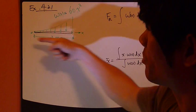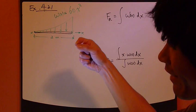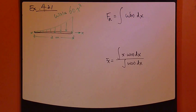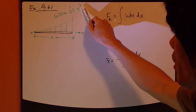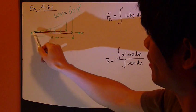Now, this bar is subject to this distributed loading Wx, which is force per length, given as 60x squared. So that's power 2, so it has a shape like this.